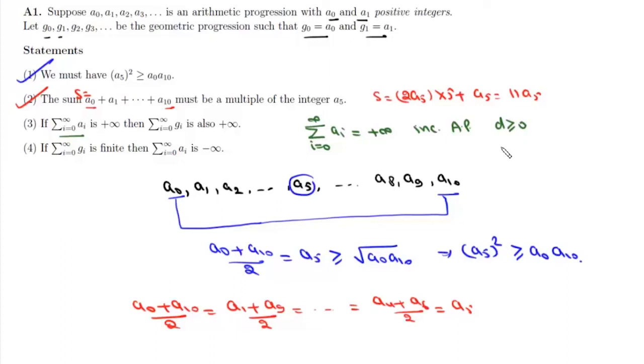So basically a1 will be greater than or equal to a0. Now for this GP, its common ratio will be a1/a0, and a1/a0 is greater than or equal to 1. Since r for this GP is 1 or greater than 1 and it contains positive terms, the sum of the GP will also diverge. So sum of the GP will also be plus infinity. That means statement 3 is also correct.